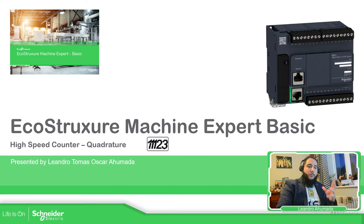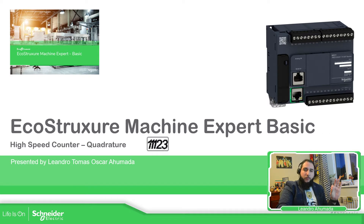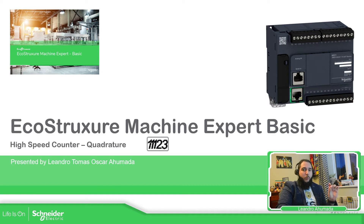In the previous video we have seen the two different high speed counter modes: we have the single phase and then we have the dual phase pulse direction. Now we're going to focus on the quadrature.